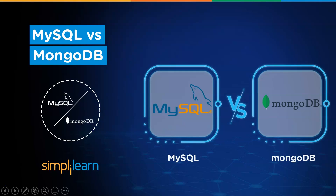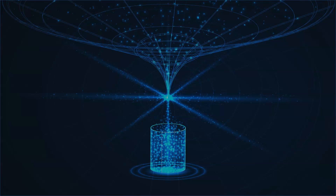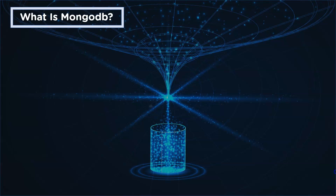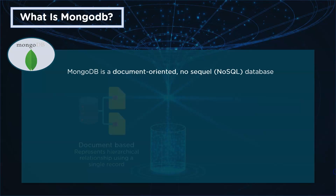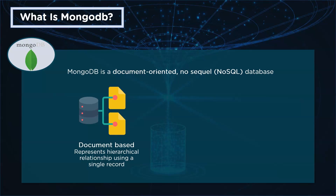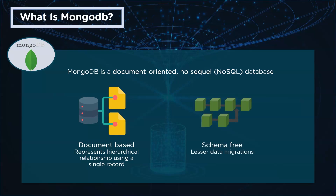Let's begin. First, let's look at what exactly is MongoDB. MongoDB is an open source document-oriented NoSQL database. It is document-based, which means that the data stored is represented in a hierarchical relationship using a single record. MongoDB is also schema-free, which means there's no set schema to define how the data is stored in the database.